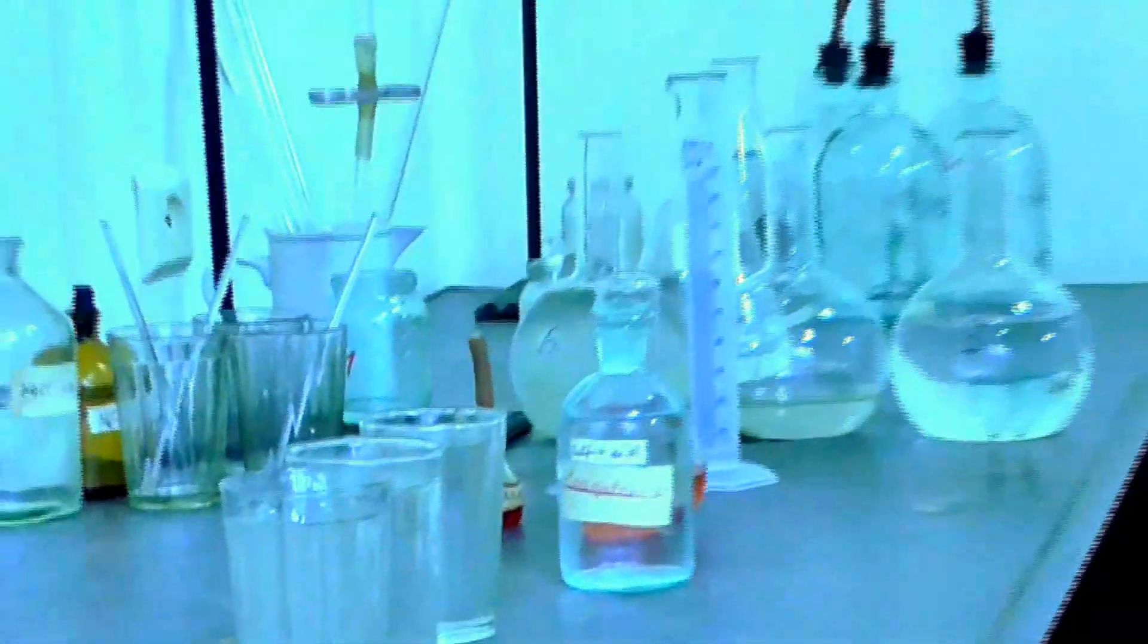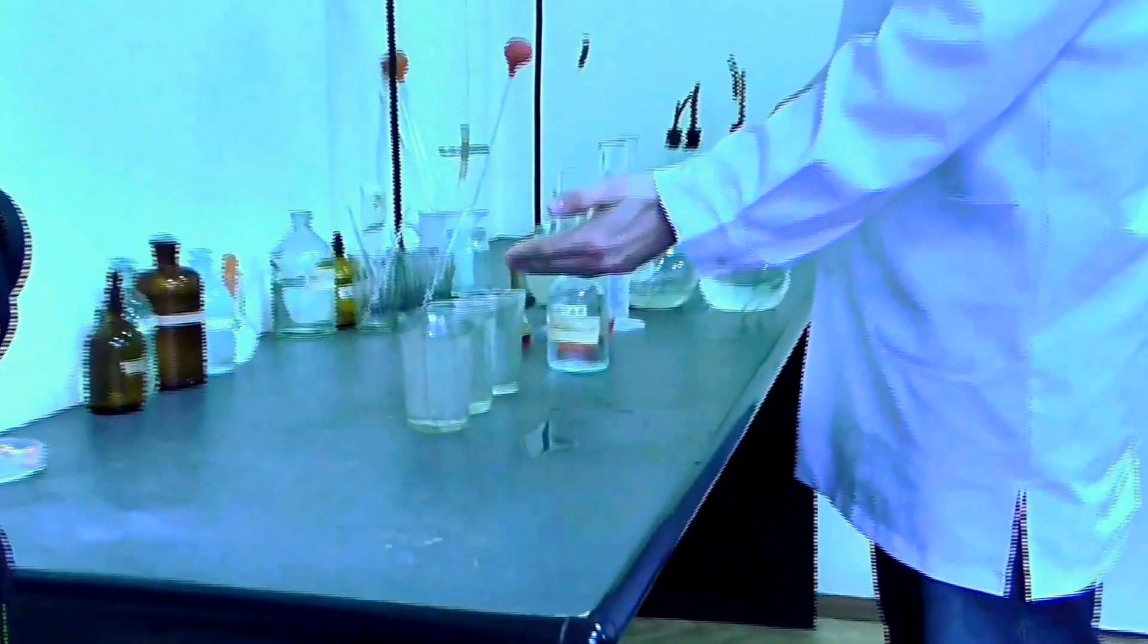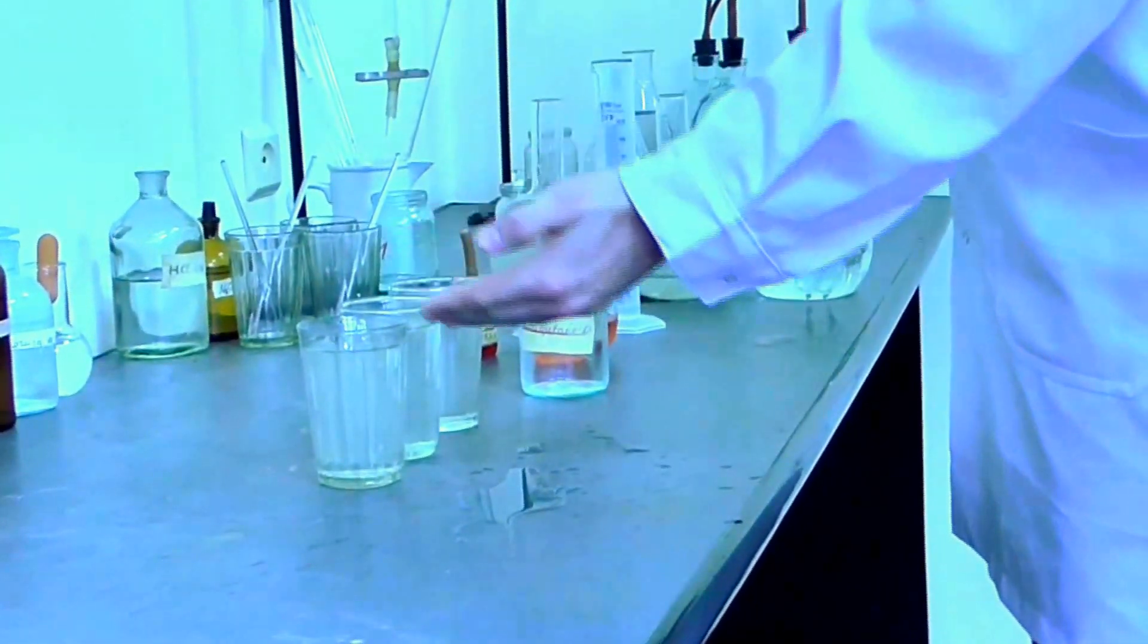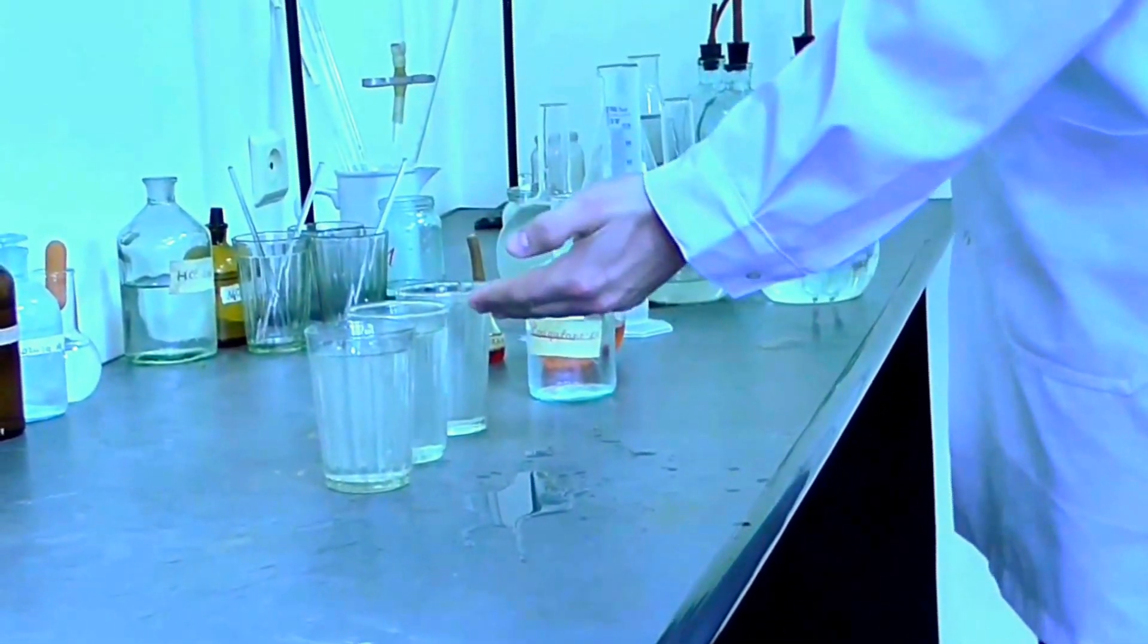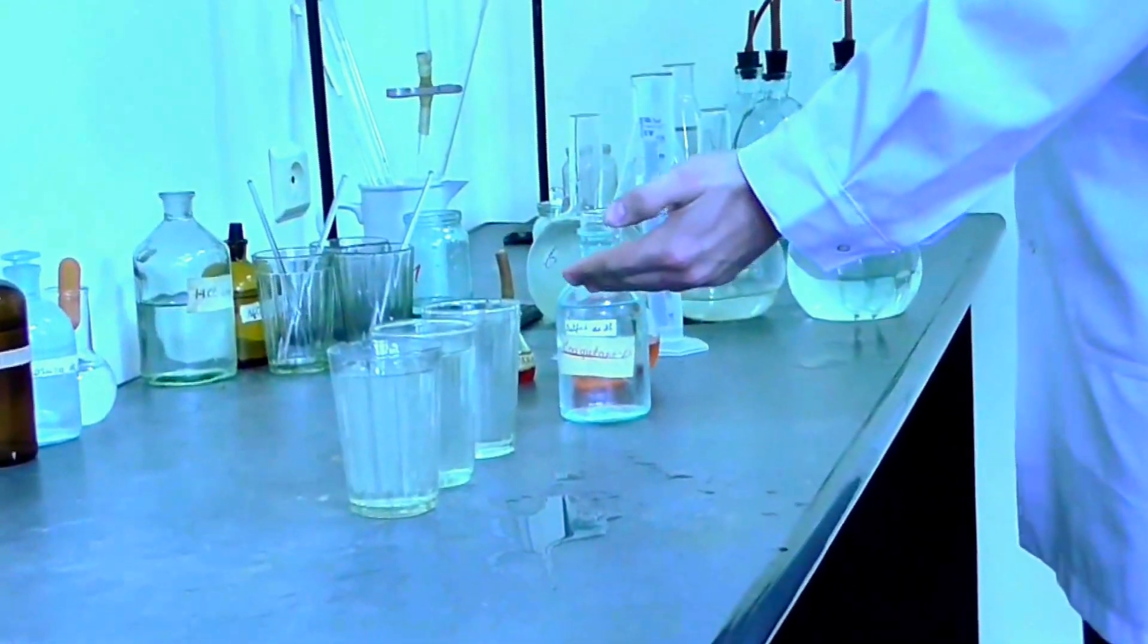Now, after determining the temporary hardness, we found that 4.5 milliliters of coagulant should be needed to purify the water. In the first cup, in order to find out which purifies better, we will put 4 milliliters, next 4.5 and 5 milliliters of coagulant.